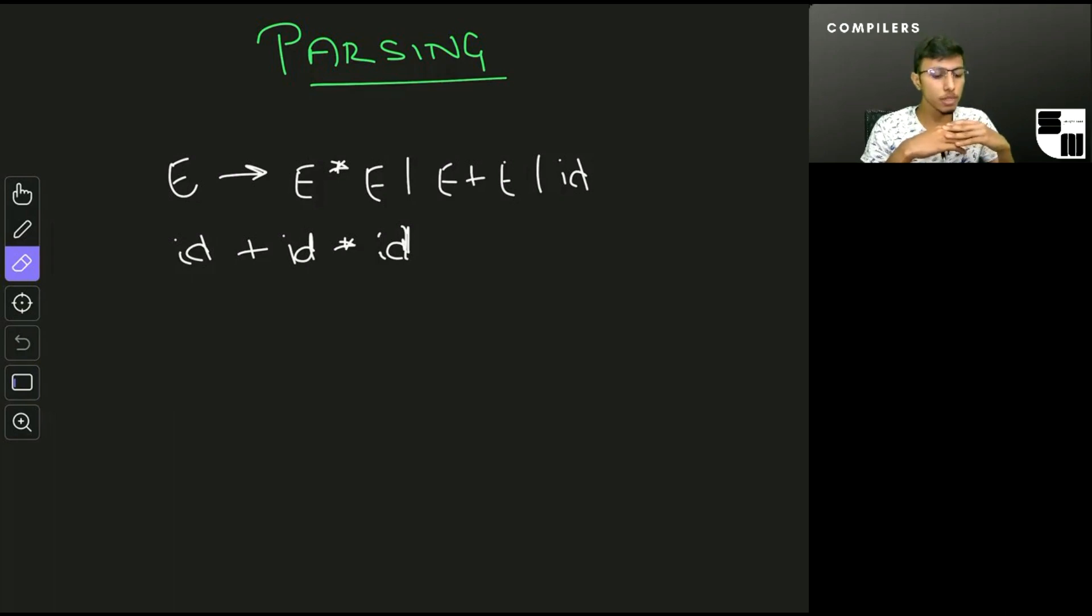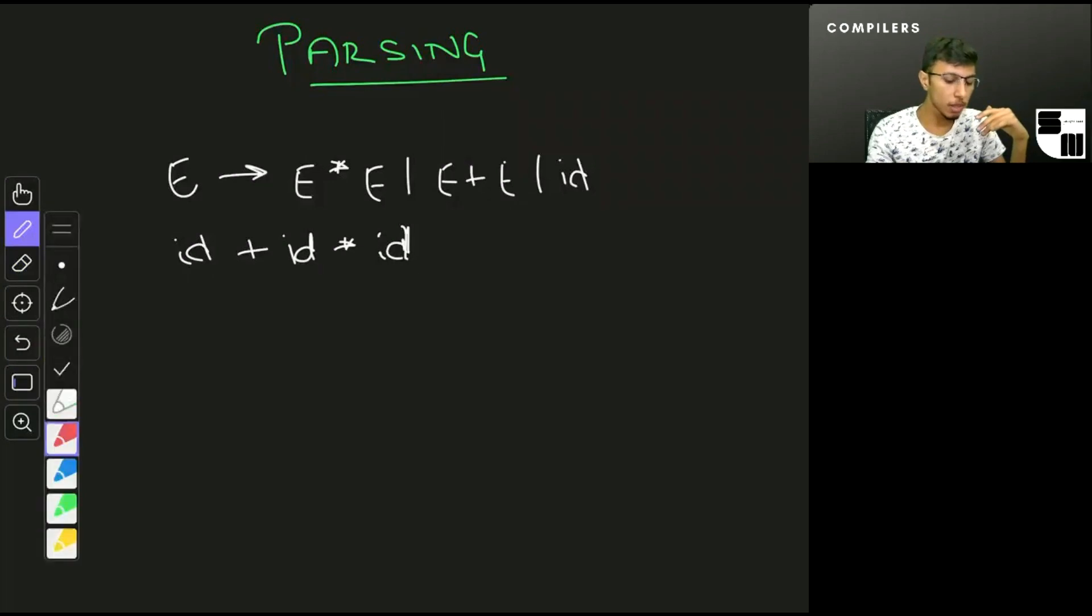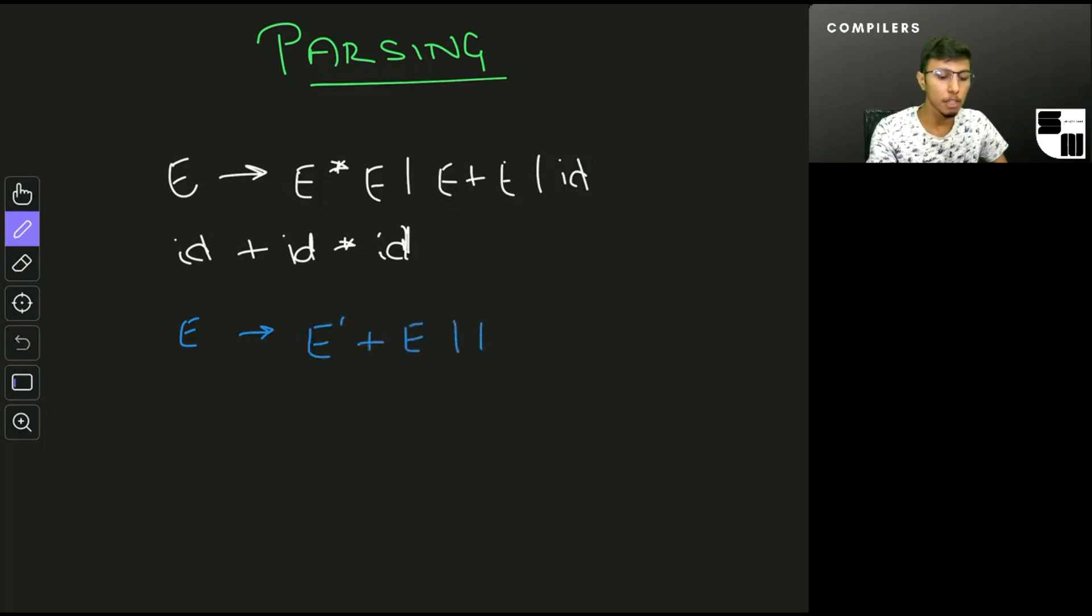The first thing we can do is disambiguate this grammar by writing it in a different way. Consider the grammar which is equivalent to the one above, but I've introduced another non-terminal to disambiguate this grammar. So I have E can go to E' plus E or E', and now E' can go to id times E' or id.